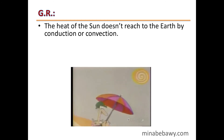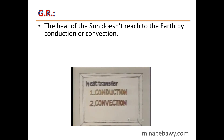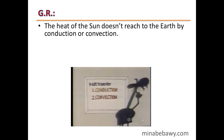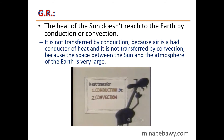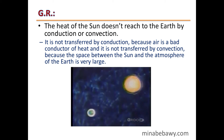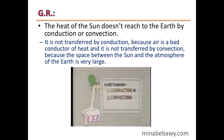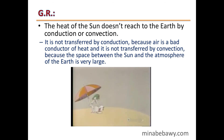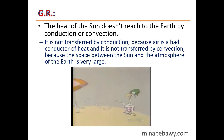Give reason: The heat of the sun doesn't reach the Earth by conduction or convection. It is not transferred by conduction because air is a bad conductor of heat, and it is not transferred by convection because the space between the Sun and the atmosphere of the Earth is very large.